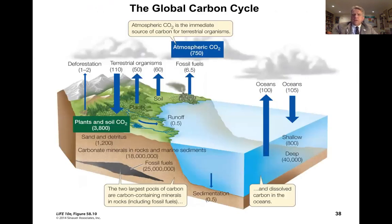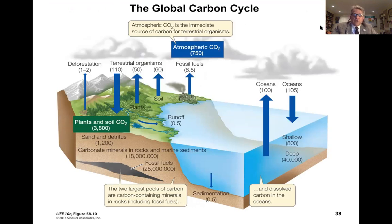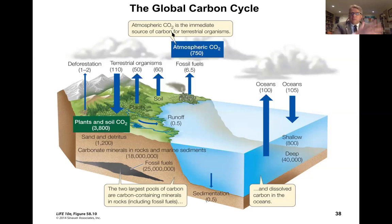Now we're going to talk very briefly about the global carbon cycle. One key takeaway from this diagram showing where carbon is sequestered on Earth: the two largest pools of carbon are carbon-containing minerals in rocks — including fossil fuels — and carbon dissolved in our oceans. Atmospheric carbon is relatively low compared to these other carbon sources on Earth.